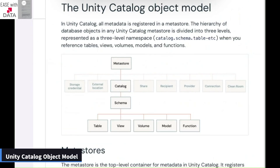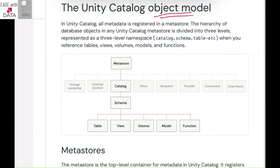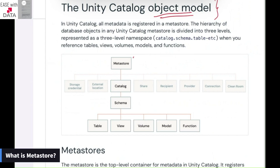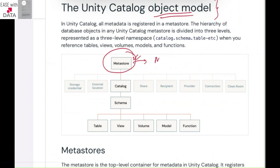It is most important to understand the object model of Unity Catalog. You need to know how Unity Catalog manages its data and non-data objects. In the object model, the topmost is the metastore, and it is used to maintain your metadata. What exactly is metadata? Metadata is your data about data.